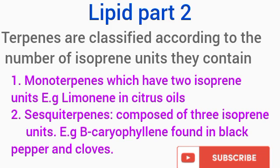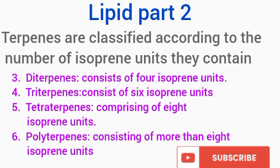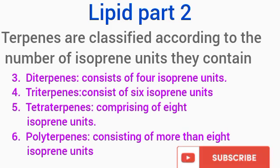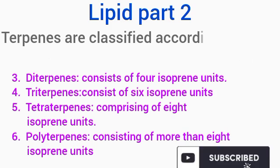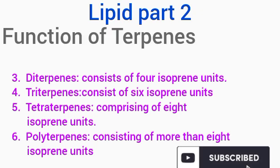Sesquiterpenes are composed of 3 isoprene units, while diterpenes are composed of 4 isoprene units. Triterpenes are composed of 6 isoprene units, and tetraterpenes are composed of 8 isoprene units. As the word implies, polyterpenes are composed of more than 8 isoprene units.